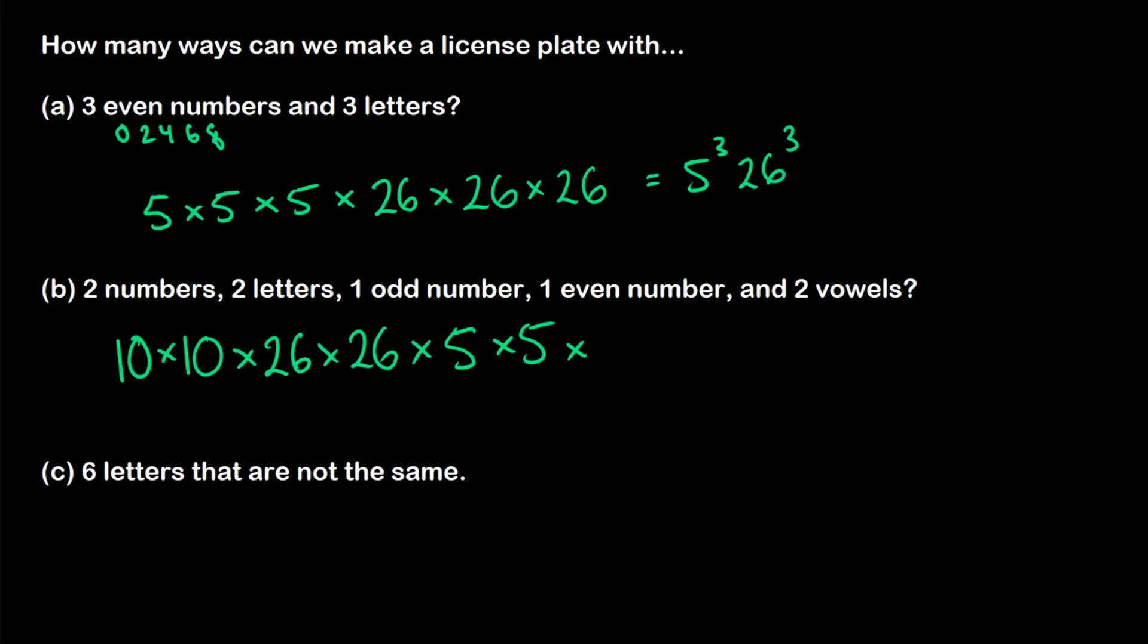And then two vowels. So we have a, e, i, o, u. So we have five choices for each vowel. So what we end up with is 10 squared times 26 squared times five to the four different ways of making this license plate.